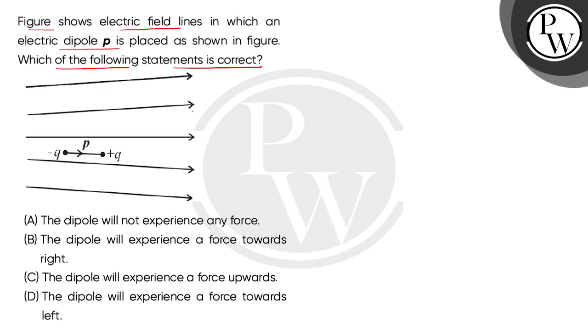So kids, here we have the figure which shows electric field lines. Now we can see that in these field lines there is a lot of spacing on the left side and there is a lot of spacing on the right side.